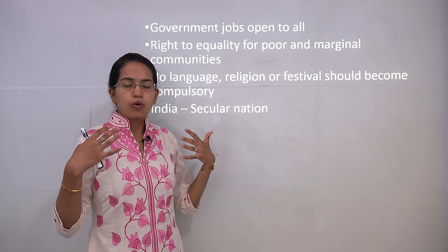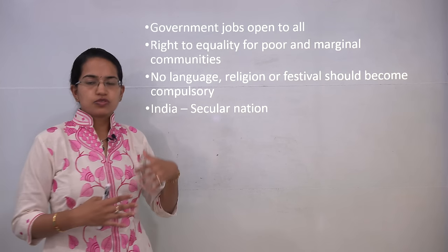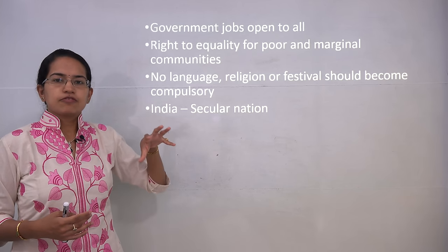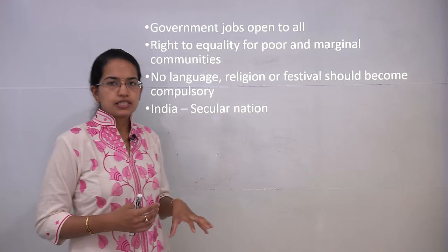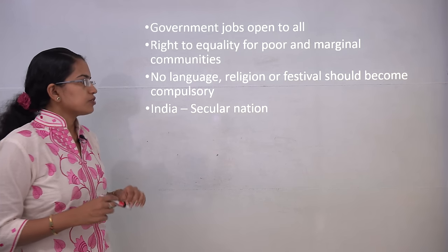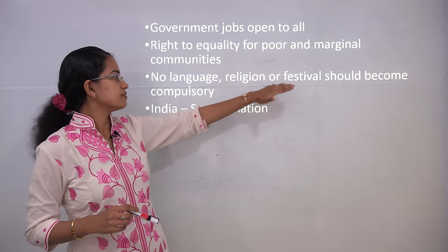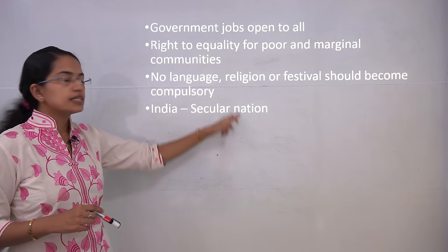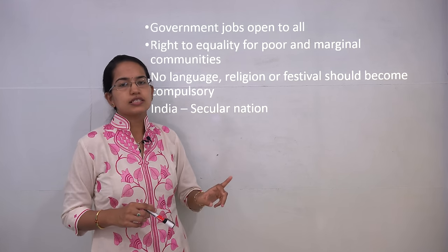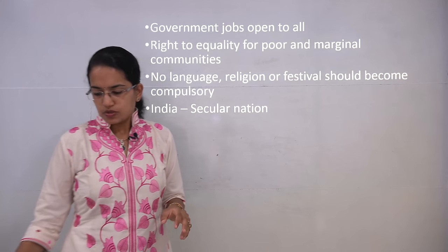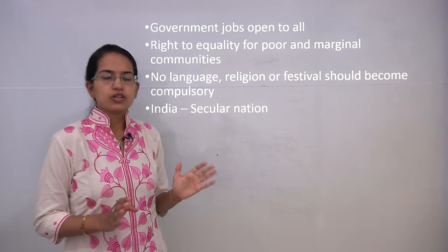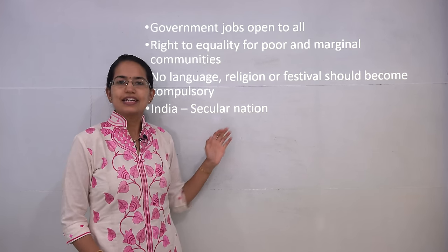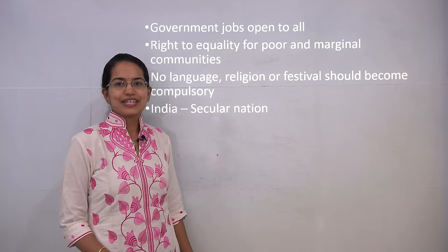There was open entry for all in government jobs — one of the major steps toward equality taken at that time. There was the right to equality for the poor and marginalized communities. No religion, no language, and no festival could become compulsory in the country. Considering this, India became a secular nation that respected the presence of all religions on Indian soil. With this, we cover the second chapter of NCERT Class 6 Political Science. Subscribe to our channel for more details. Have a good day ahead.